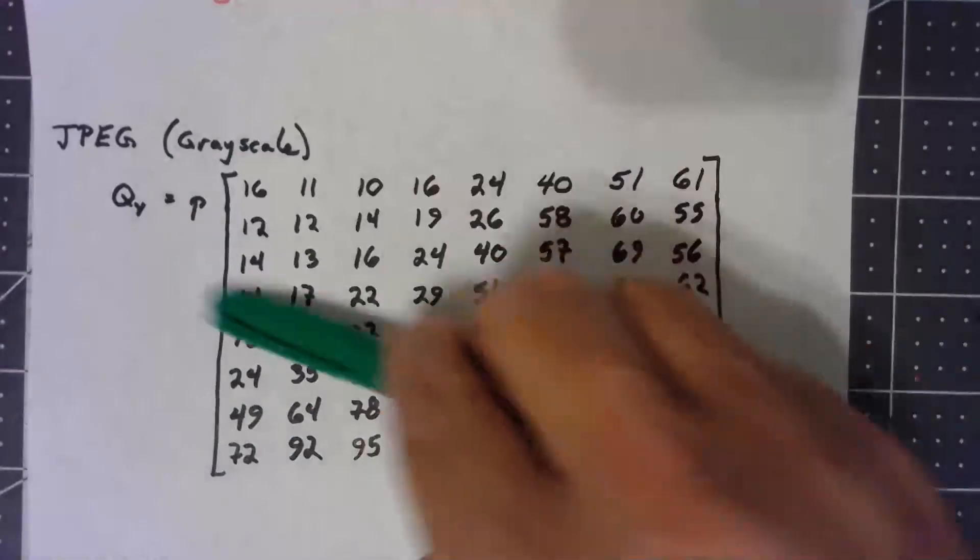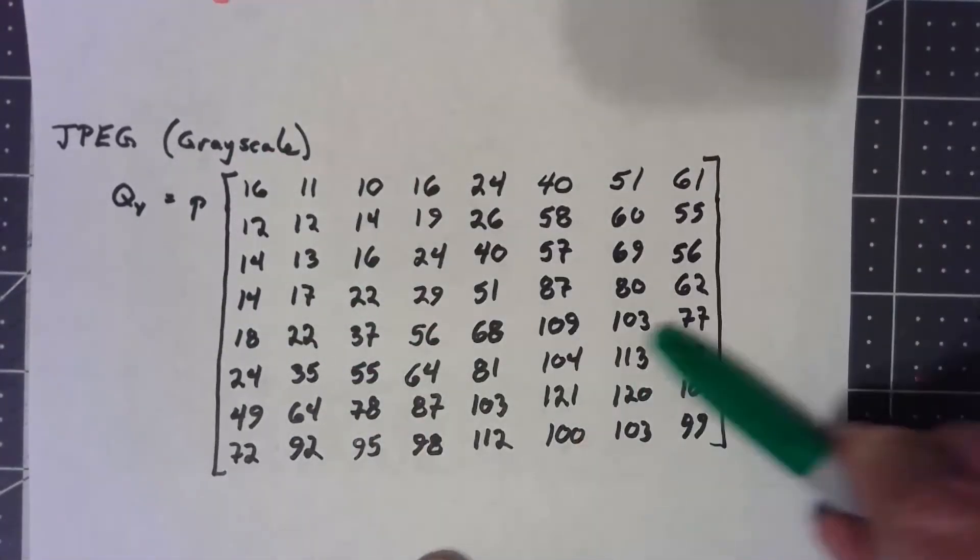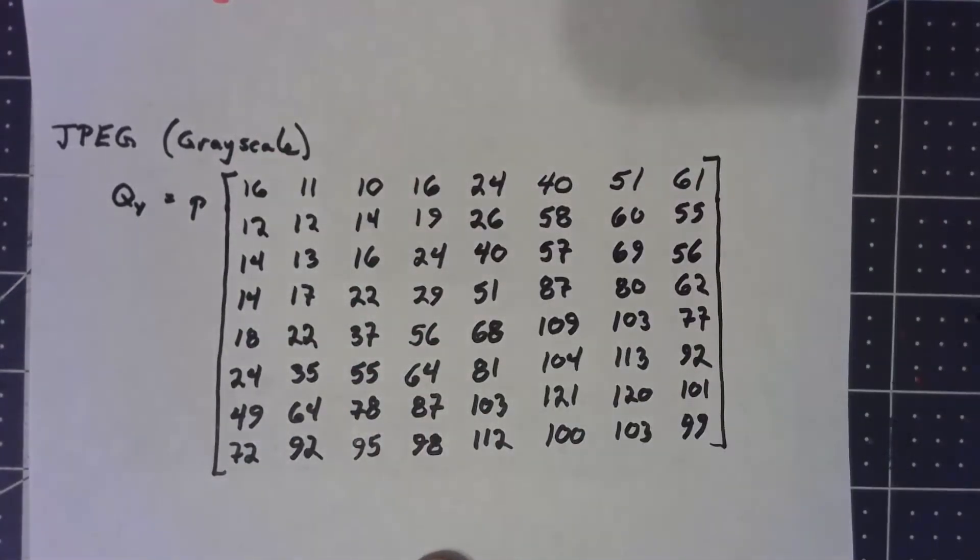In general, there will be less roundoff error up here and more roundoff error down here. In fact, some of these numbers down here are so big, you're going to end up with a lot of zeros, which do make it closer to that low pass filtering.